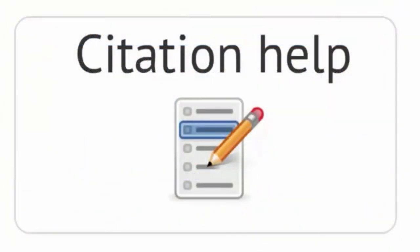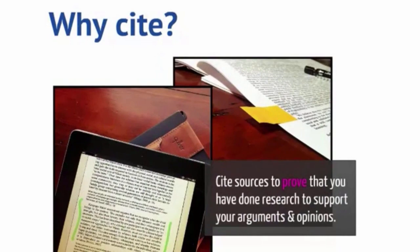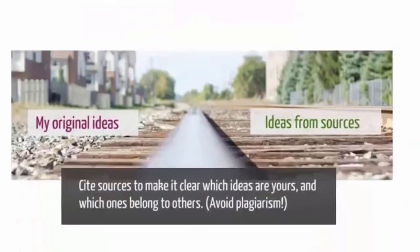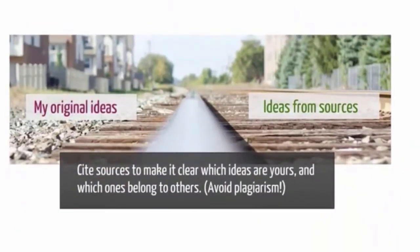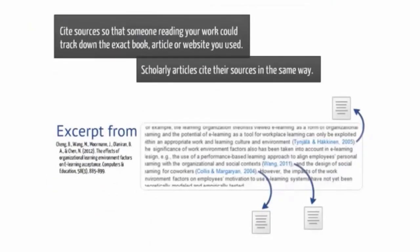Our last topic is citation help. There are a number of resources that can help you cite your sources in the proper format. But first, why is it important to cite? Cite your sources to prove that you have done the research to support your argument and opinions. Make it clear which ideas are yours and which ones belong to others. Avoid plagiarism. Cite your sources with all the required details so that someone reading your work could track down the exact book, article, or other source that you used.